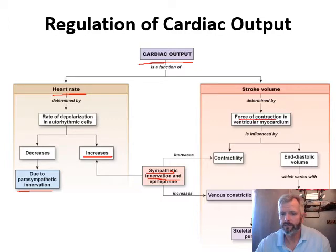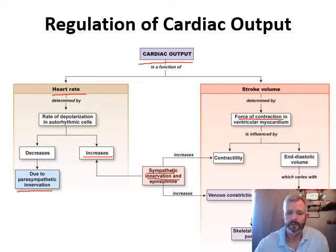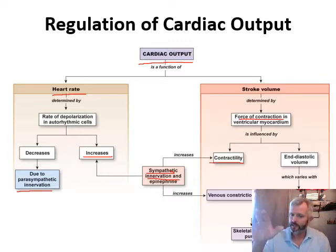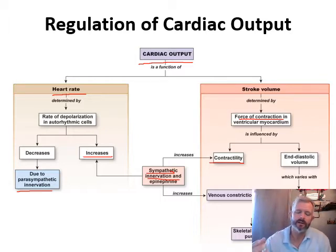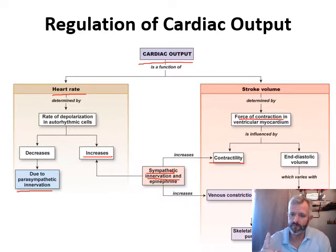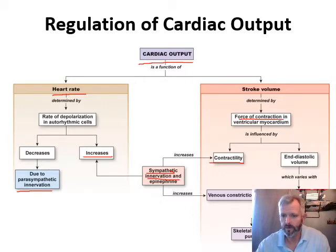Stroke volume is determined by the force of contraction — how forcefully the myocardium is contracting. The sympathetic nervous system has an effect on contractility, and it innervates the cardiac muscle, increasing the forcefulness of beating. We also see end-diastolic volume, EDV — how much blood is in the ventricle before it contracts. As EDV goes up and diastolic volume goes up, so does contractility and the force the ventricles generate.